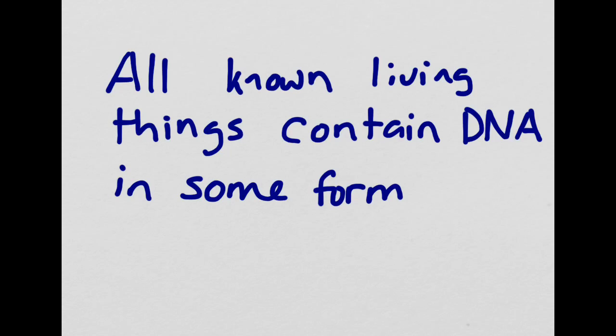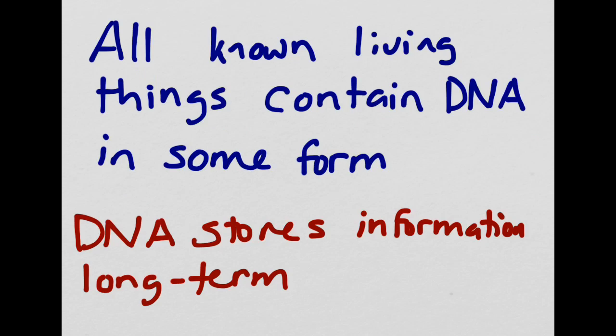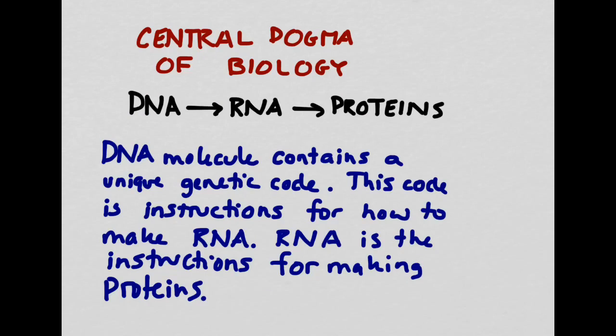To begin with, all known living things contain DNA in some form. DNA stores information long-term so that it can be passed on to an organism's offspring. This is where the central dogma of biology comes back into play. DNA contains a unique genetic code, and this genetic code tells the body how to make RNA.